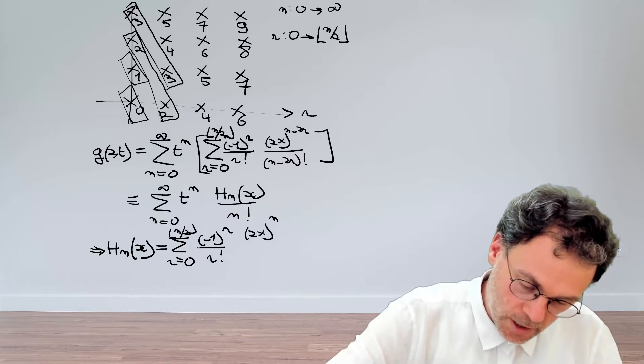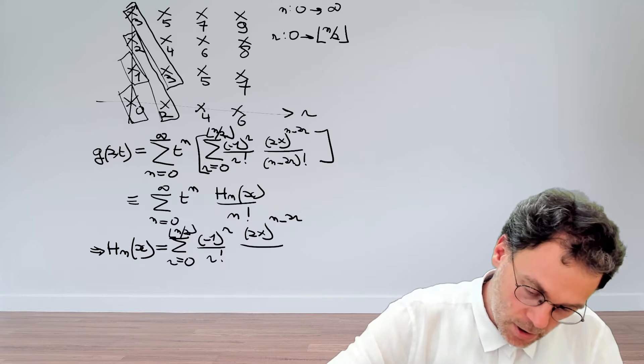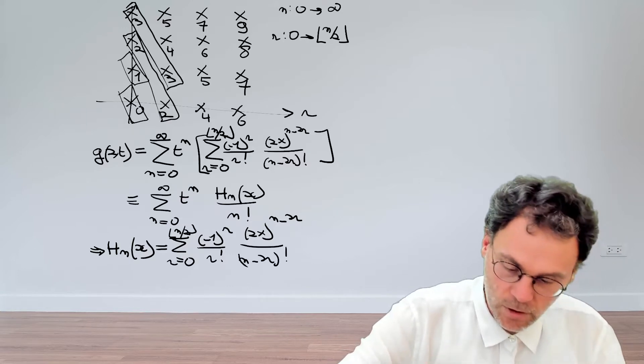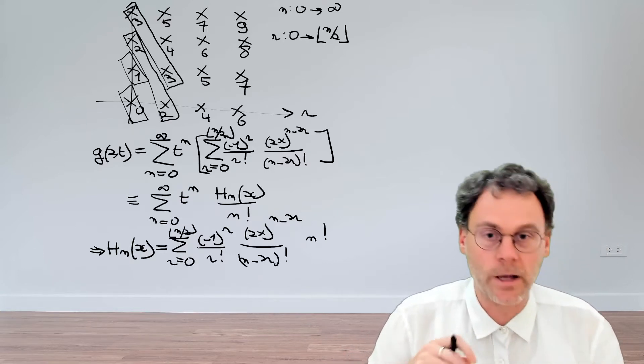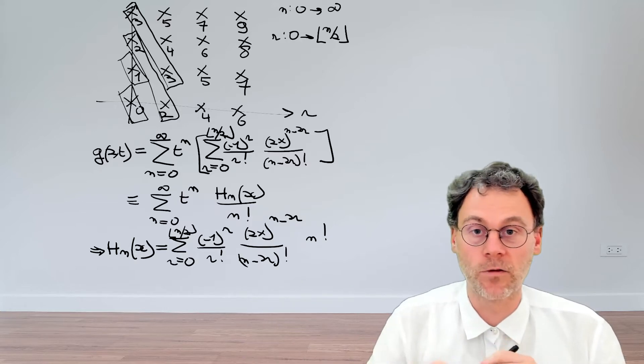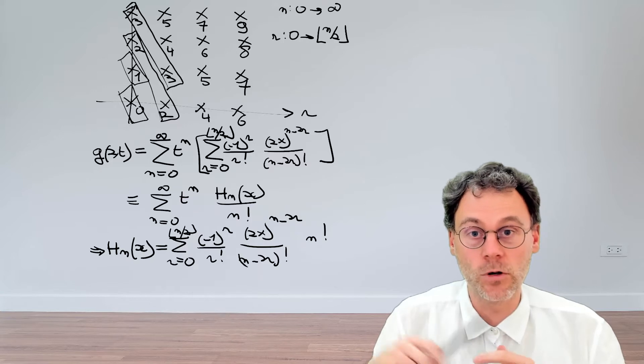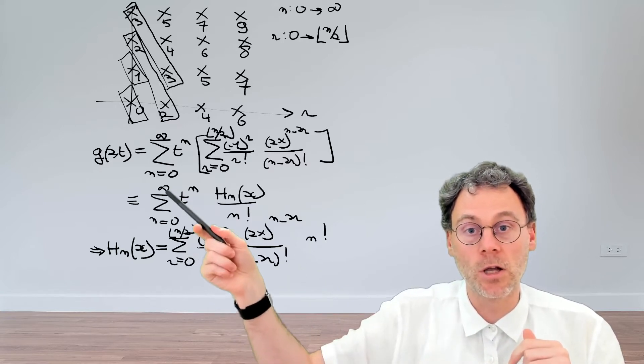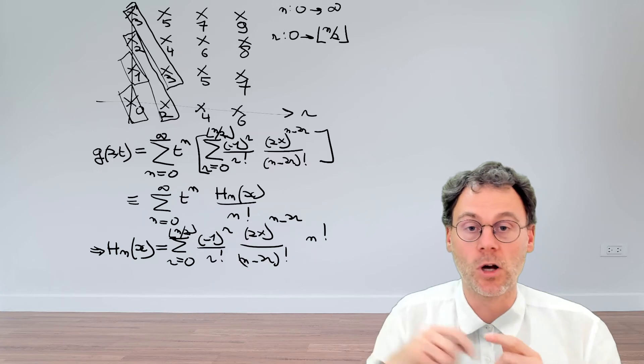2x to the power of n minus 2r, (n minus 2r) factorial, multiplied by n factorial. And there we have it. That's an explicit form for the Hermite polynomials. So you clearly see that these are polynomials because the summation terminates for finite n.